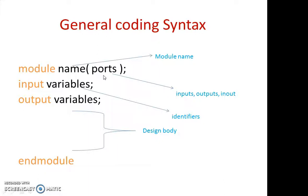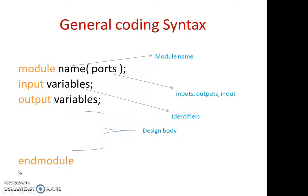We are just going to declare the ports here, then specify the inputs — all the variables we have used as inputs. Then next, we are going to specify the outputs — all the variables we are going to use. This is the initial declaration part. At the last, we are going to specify the AND model. This is the general syntax we usually follow for Verilog coding.